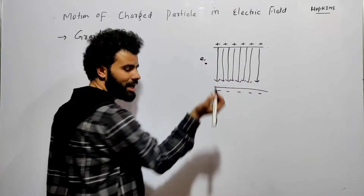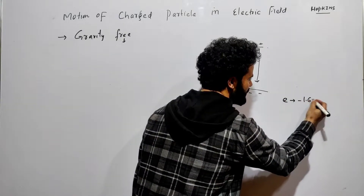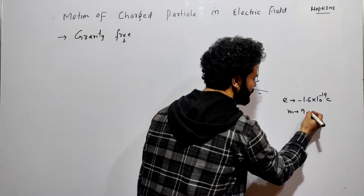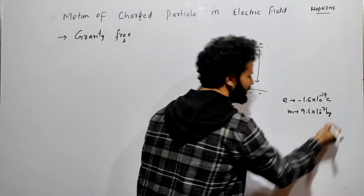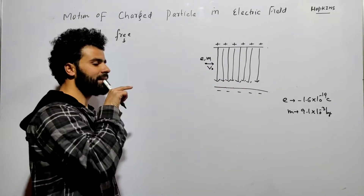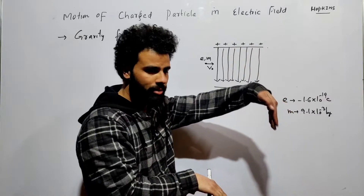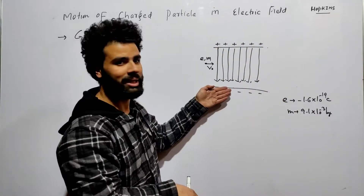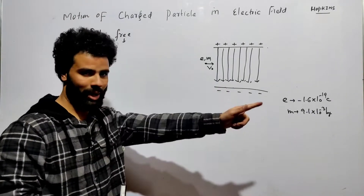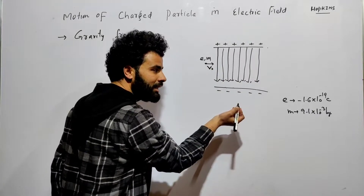Now let's take an electron with charge minus 1.6 × 10⁻¹⁹ coulombs and mass 9.1 × 10⁻³¹ kg. I give it an initial velocity v₀ along the horizontal direction. This is a positive plate on top and a negative plate below; the electric field goes downward. I am sending the negative charge — the electron — horizontally. This initial velocity v₀ is along the x-axis.